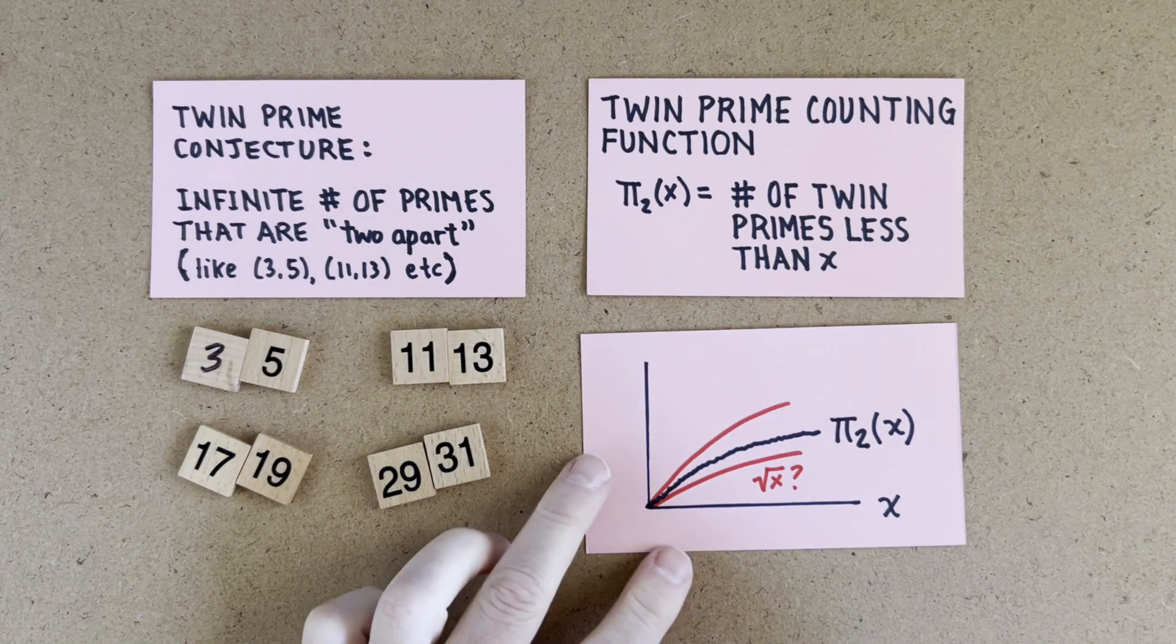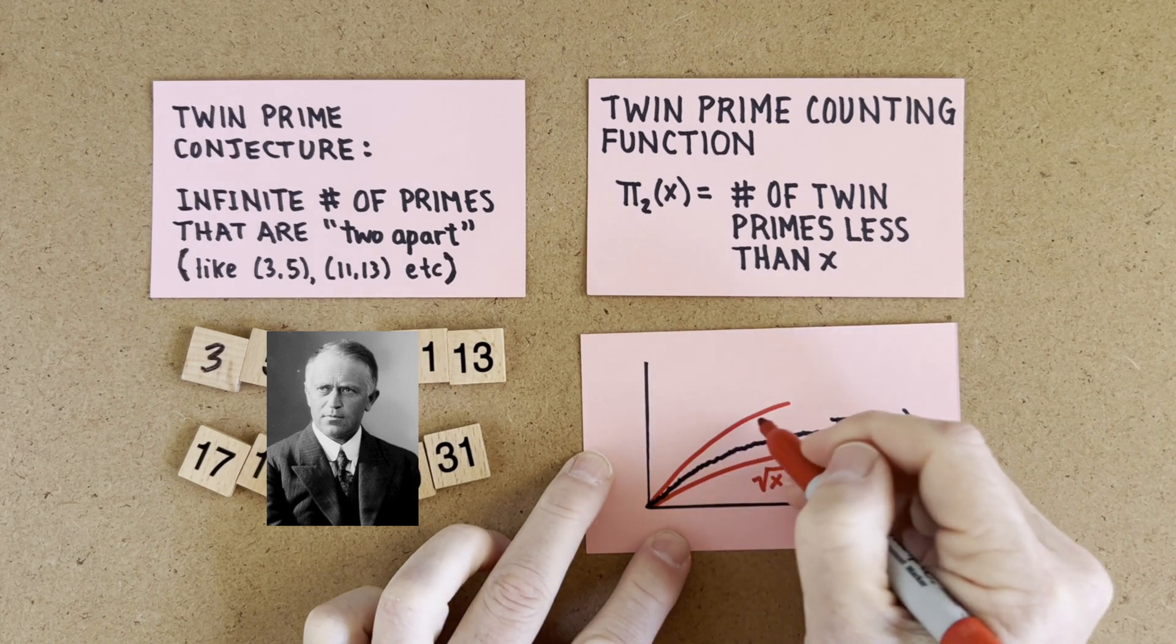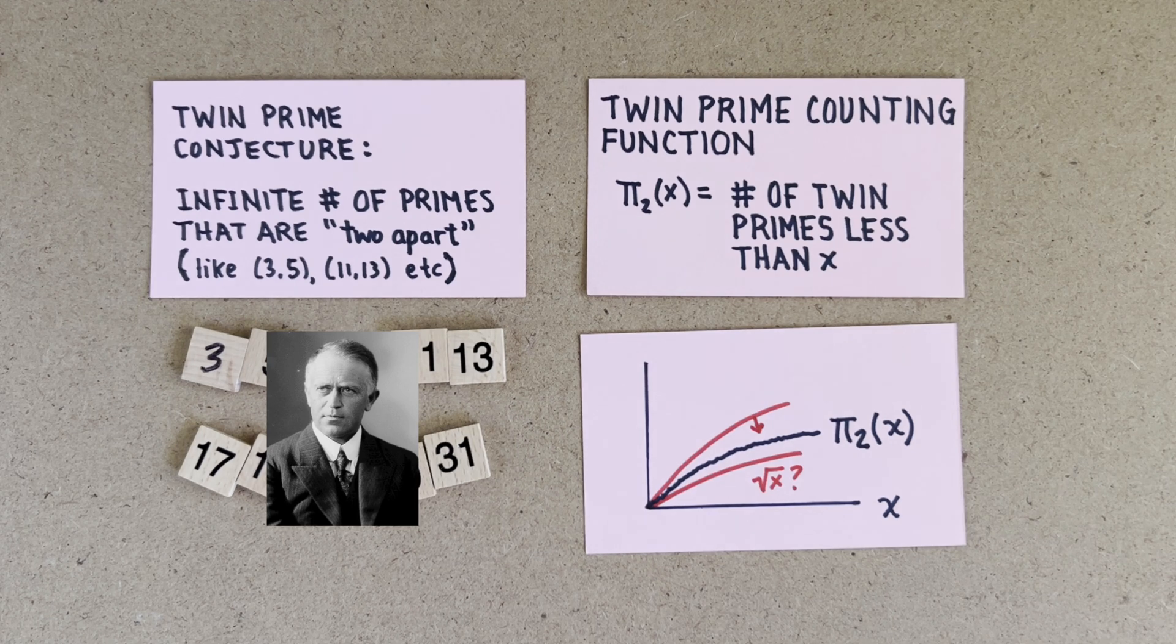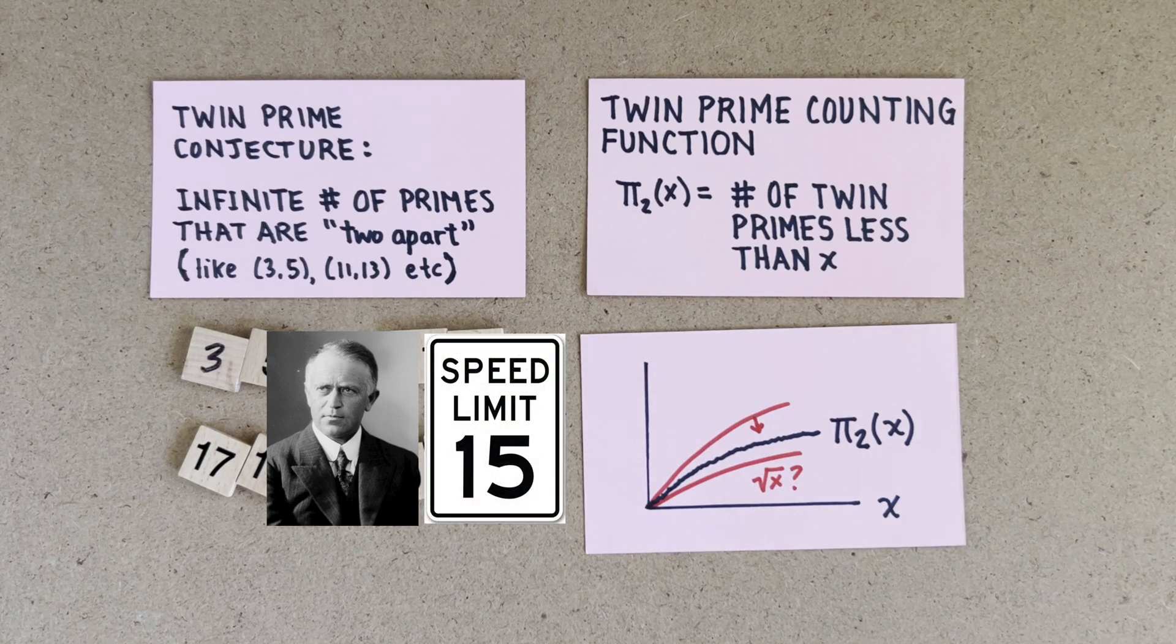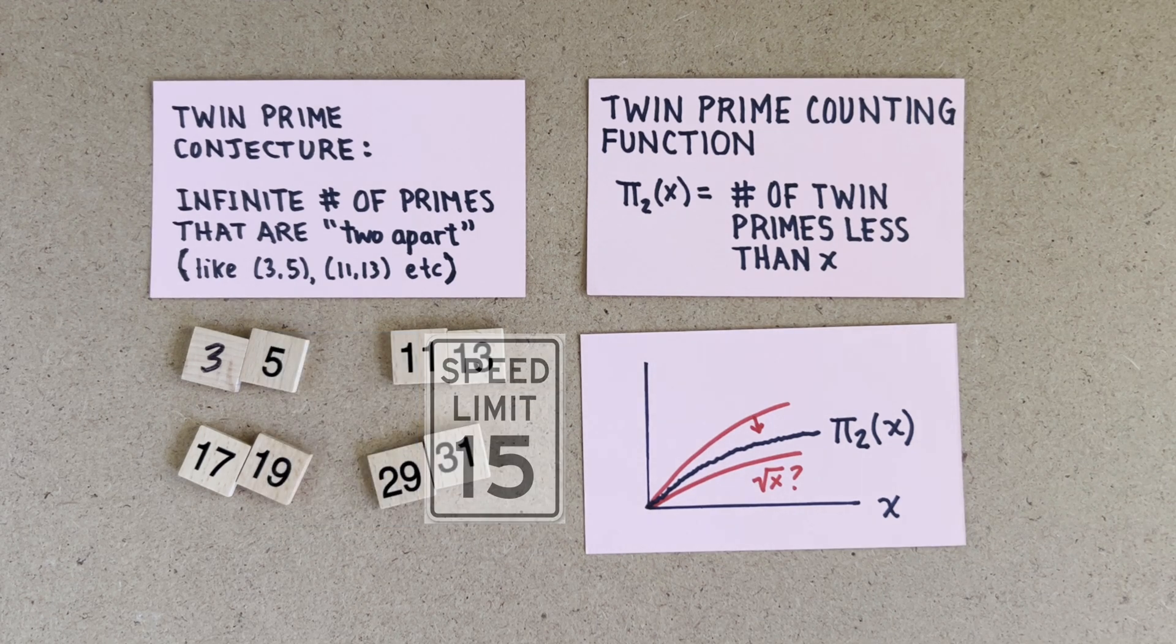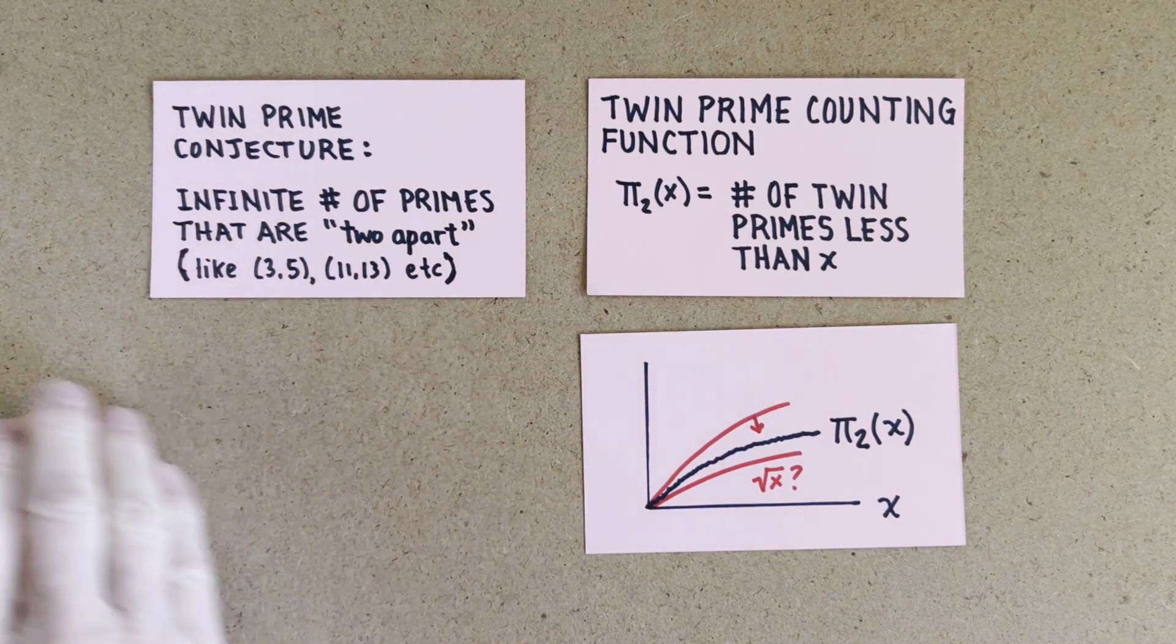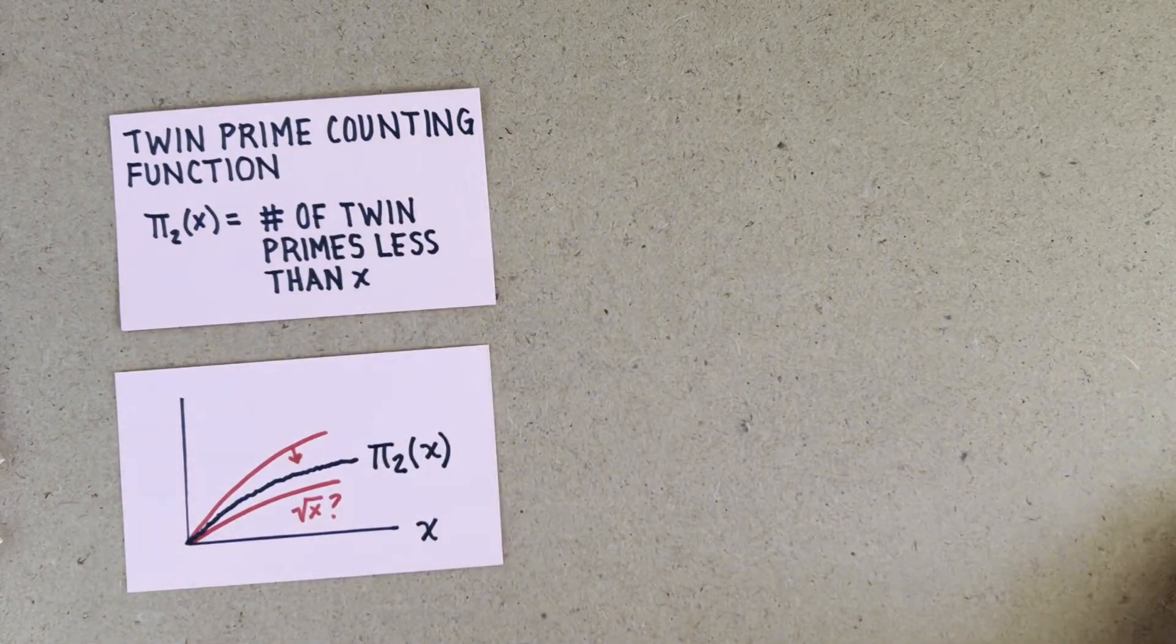The Norwegian Viggo Brun made a proof for a top curve. He said the number of twin primes between 1 and x can't exceed such and such, kind of a speed limit for how fast the twin primes keep rolling in. It's hard to grapple with how many twin primes there are unless we first grapple with how many regular primes there are. So that's the topic for today.